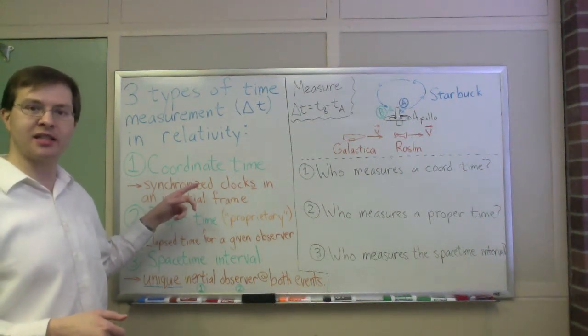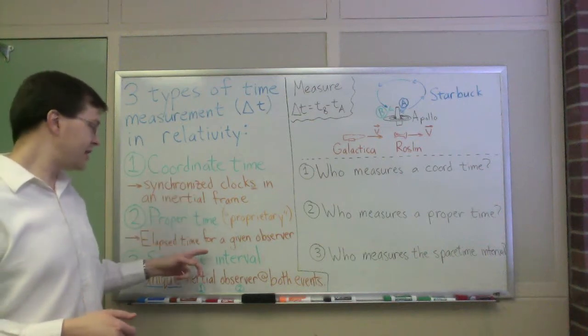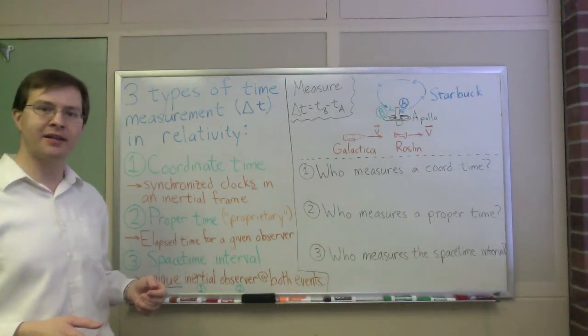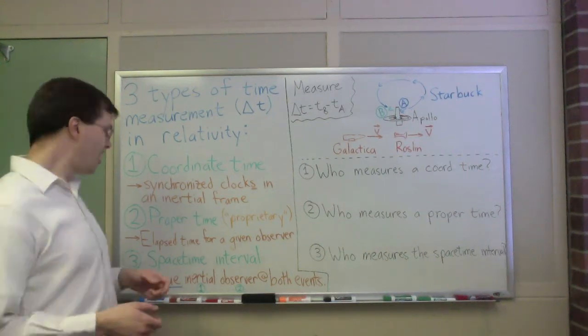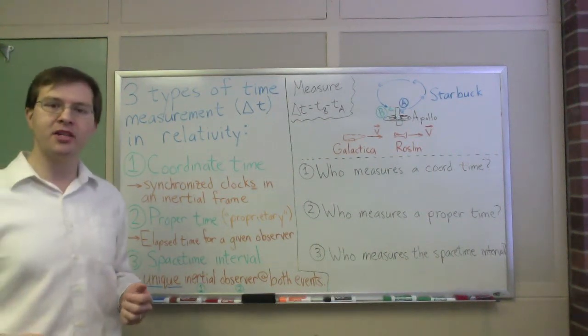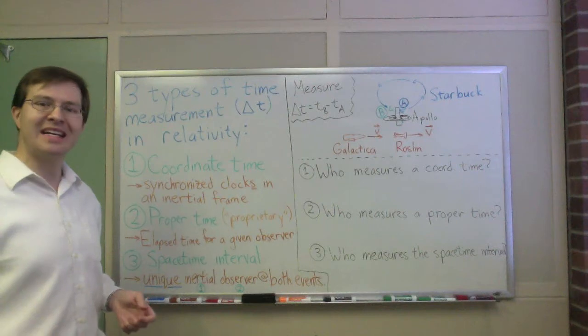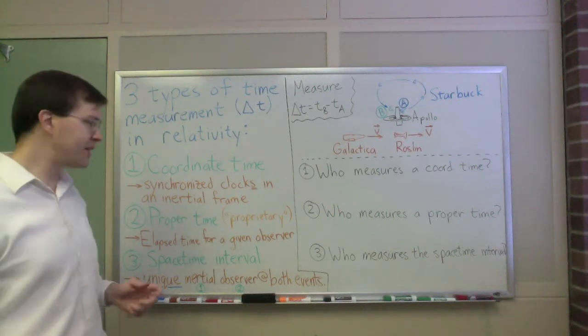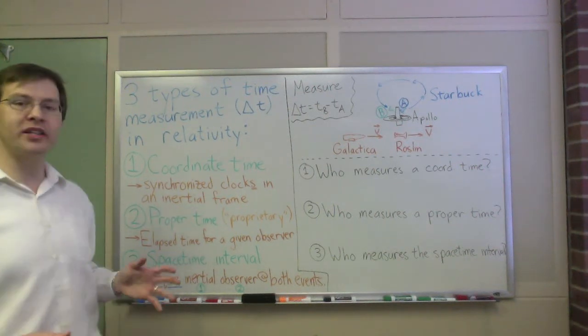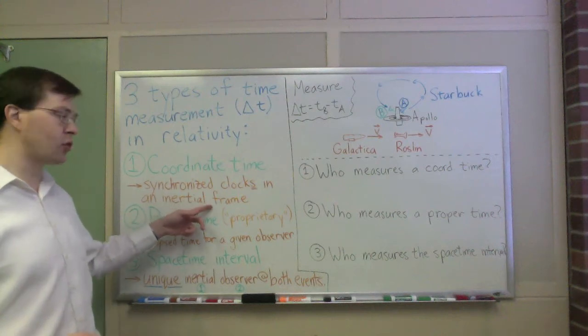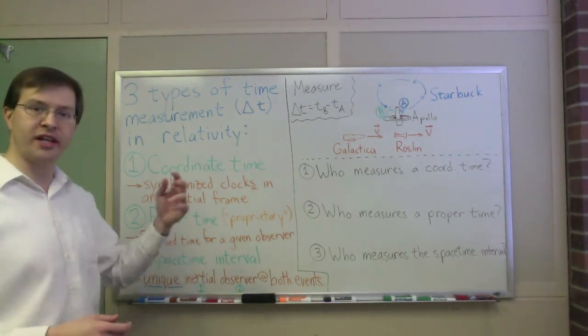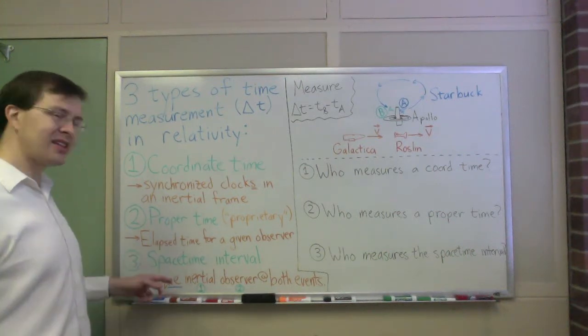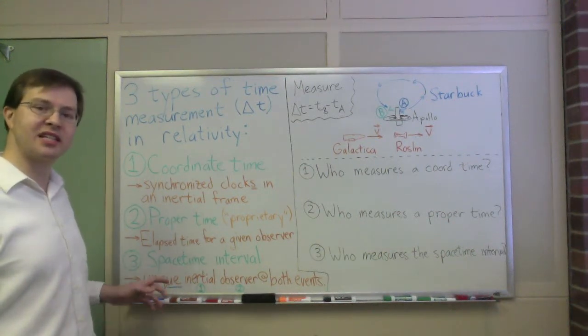In general, you expect to have two different clocks at the different events, whereas down here, you expect that you have to have the same observer at both. The third type of time measurement in special relativity to talk about is the space-time interval. And this one is the only one that's unique because there are lots of different inertial coordinate frames. There are lots of different paths that observers could take from event A to event B. But the space-time interval is the only one of these things that is unique.